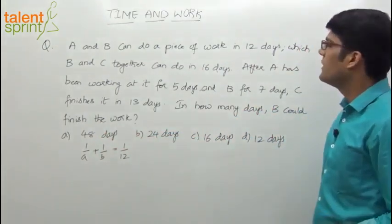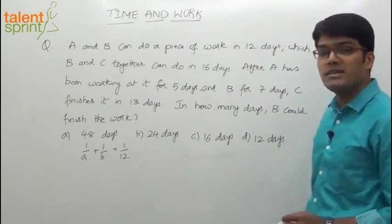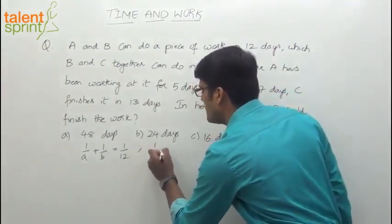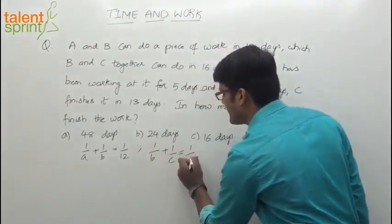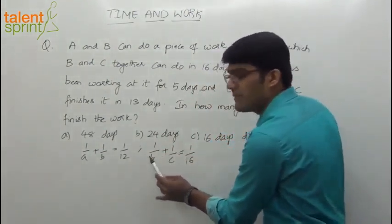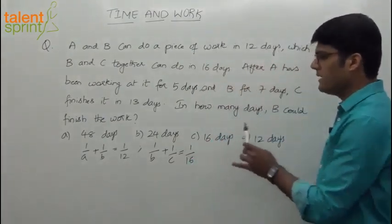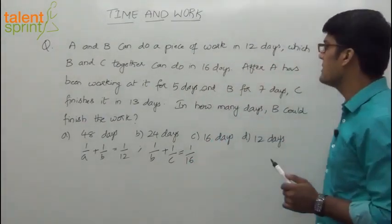A and B can do a piece of work in 12 days which B and C together can do in 16 days. Now B and C can do it in 16 days means 1 by B plus 1 by C equals 1 by 16, where B is the number of days required by B, C is the number of days required by C, and A is the number of days required by A.